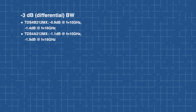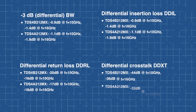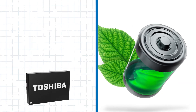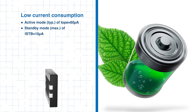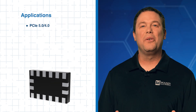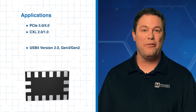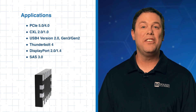Both devices deliver excellent signal integrity with wide negative 3 dB bandwidths, low insertion and return losses, and minimal crosstalk, helping ensure reliable transmission across high-speed lanes. Additionally, these devices consume just 60 microamperes in active mode and up to 10 microamperes in standby. Their ultra-low power usage makes them a perfect fit for energy-efficient, high-performance systems like the ones you see here.